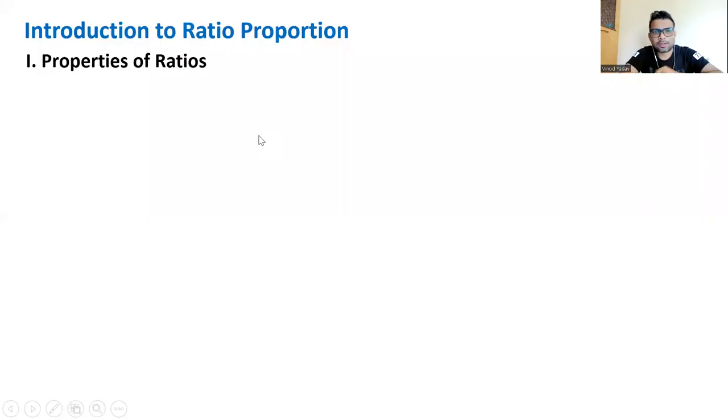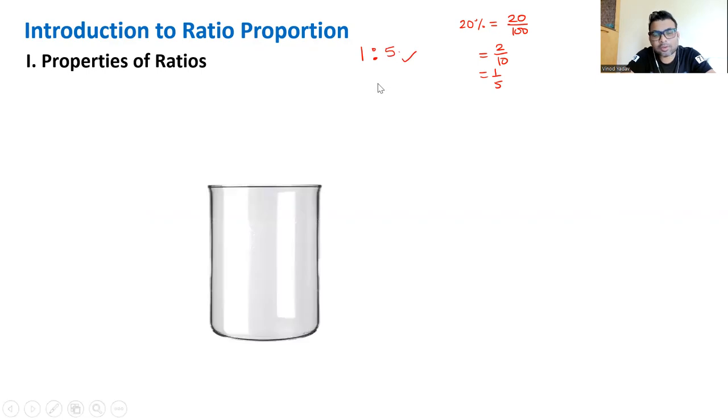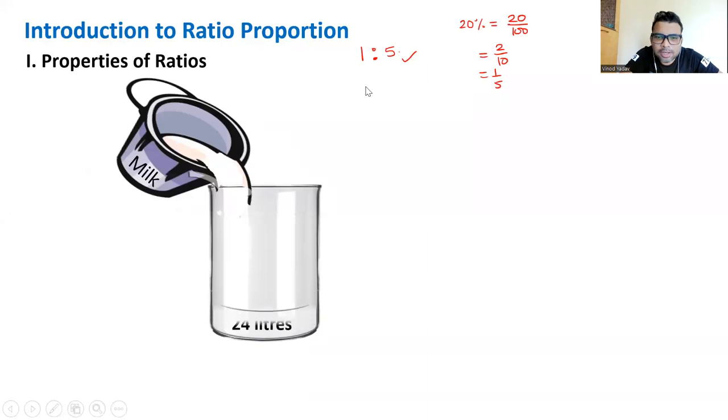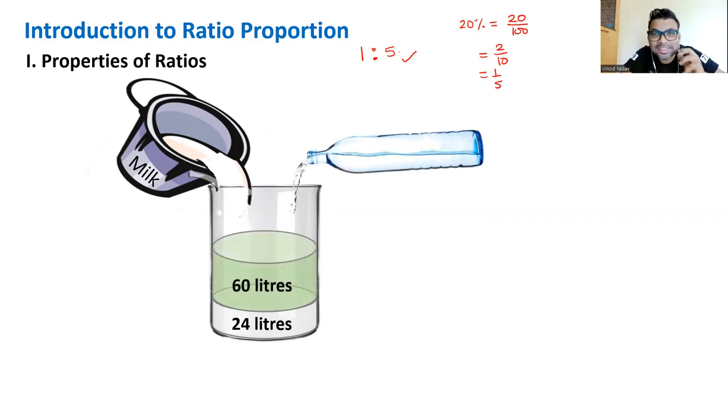So let's start with ratio, nothing new for you. When I say ratio, it's a very familiar term we have used so many times. In fact, percentage was also a ratio only. When I say 20%, it simply means 20 divided by 100, which reduces to 1 divided by 5, which can also be written as 1 is to 5. Let's take one more famous example. There's a milk. Suppose I added 24 liters of milk in a vessel, and then I added 60 liters of water.